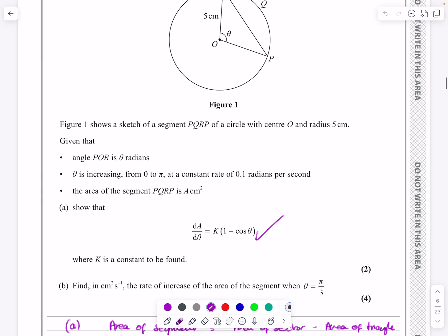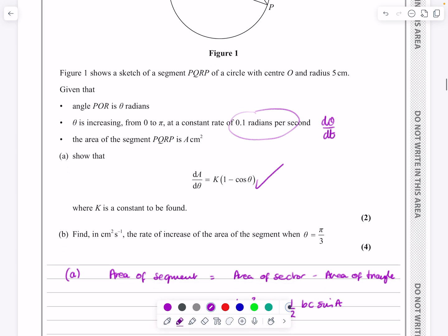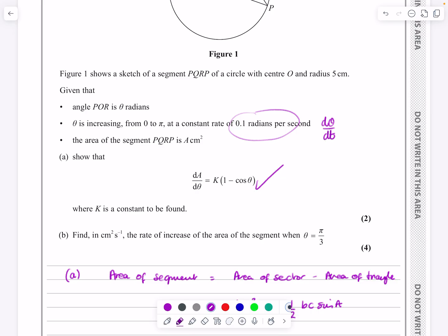Let's read through the rest of the questions, just go back and have a look at it now. So it says theta is increasing at a constant rate of 0.1 radians per second. So that one there is going to be dθ by dt. It then asks me to find in centimeters squared the rate of increase of area. Well, that's dA by dt.